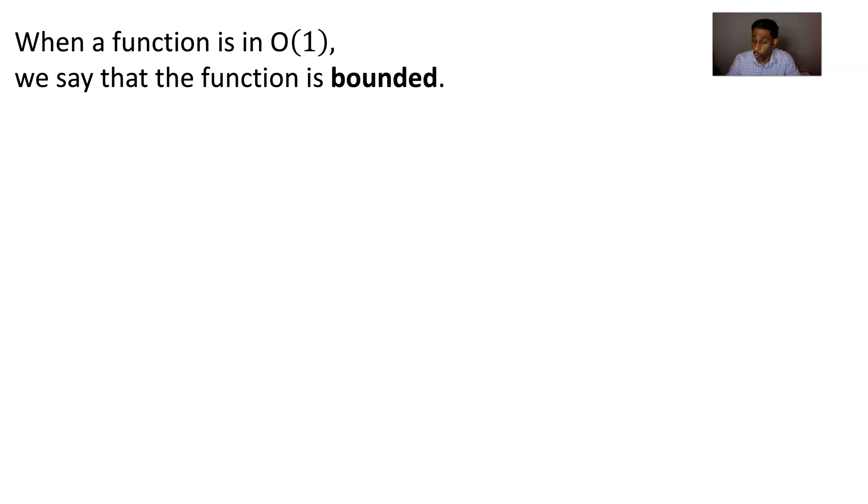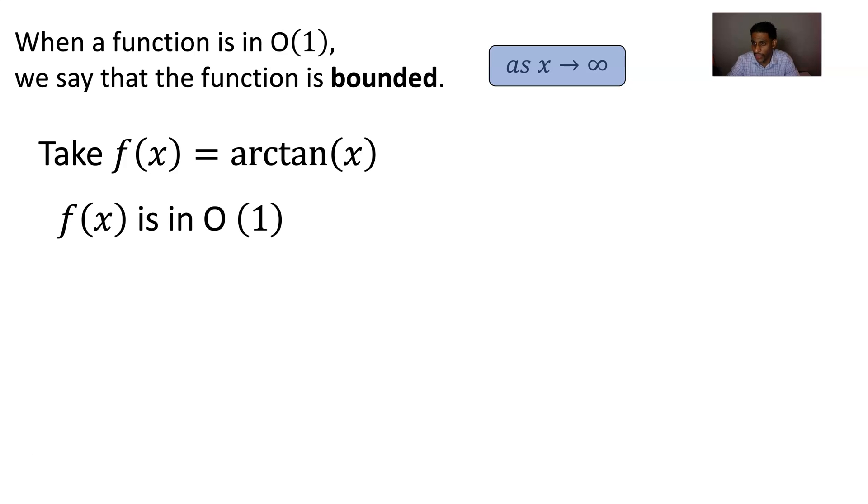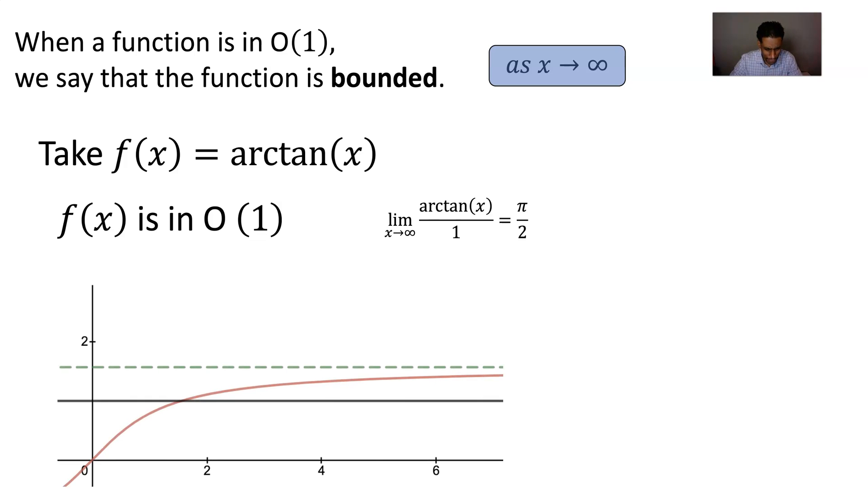When a function is big O of 1, we say that the function is bounded. We're talking about everything we're talking about in this video is as x is going to infinity. All right, so let's take f(x) equals the arctan of x. And it's in big O of 1. Why is it in big O of 1? When we divide arctan x by 1, take the limit as x goes to infinity, we get pi over 2. Arctan can get no bigger than pi over 2. And so the pi over 2 is the green dashed line there. The red function's graph is y equals the arctan of x, and then in black there you can see y equals 1. They're growing, eventually they'll be parallel to each other. Arctan x is bounded. It is in big O of 1.